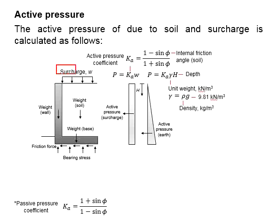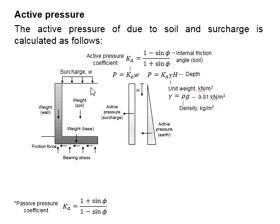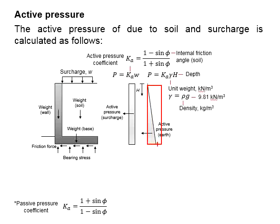Due to the preload by the surcharge, the active pressure due to the surcharge is consistent throughout the depth of the retaining wall. As for the active pressure by the soil material, the active pressure increases along the depth of the retaining wall.